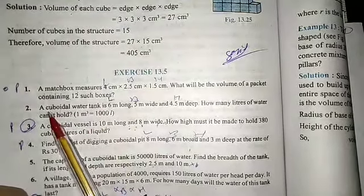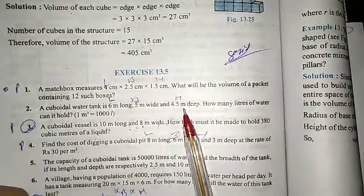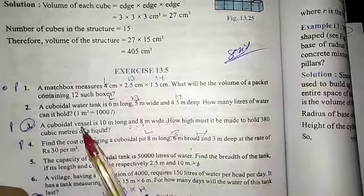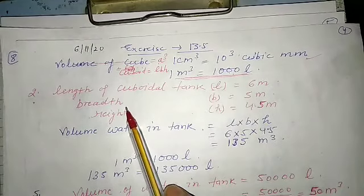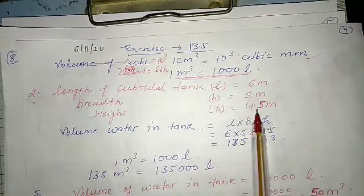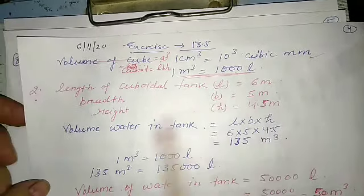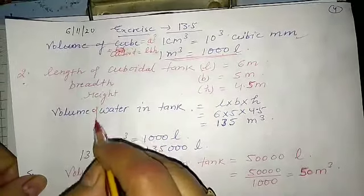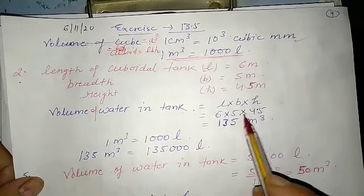The second question is about a cuboidal water tank 6 meters long, 5 meters wide, and 4.5 meters deep — how many liters of water can it hold? The length is 6 m, breadth is 5 m, and height is 4.5 m. All units are the same, so we can directly find the volume: l × b × h = 6 × 5 × 4.5.